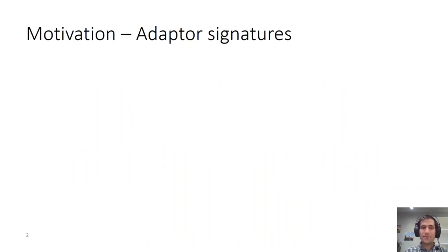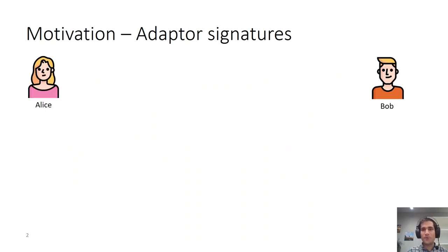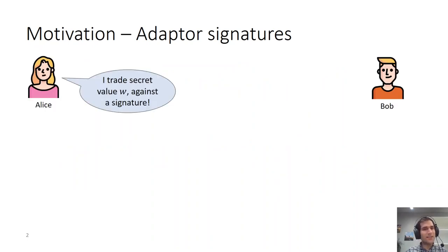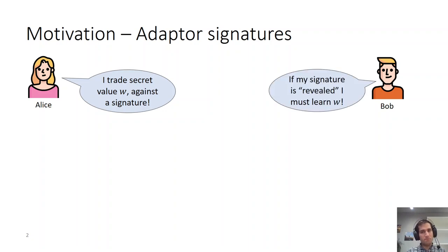Let's start with some motivation. Consider the following scenario. We have two parties, Alice and Bob, where Alice has a secret value W which she would give to Bob in exchange for Bob's signature on a message. Bob, on the other hand, would give Alice a signature but he would like to be sure that upon his signature being revealed, he would learn the witness W that Alice promised.